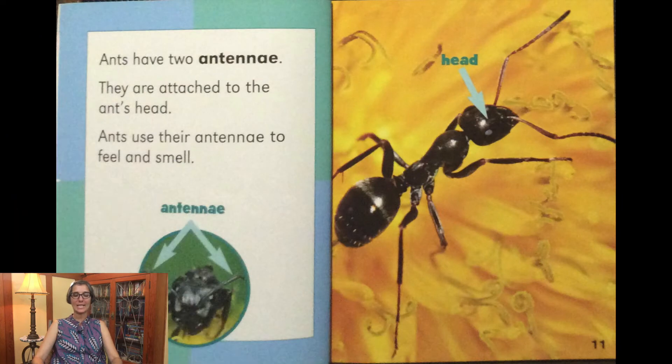Ants have two antennae. They are attached to the ant's head. Ants use their antennae to feel and smell.